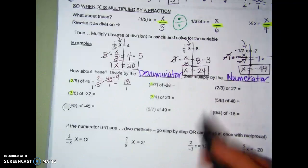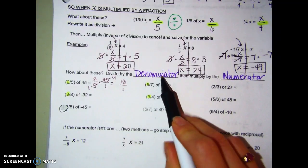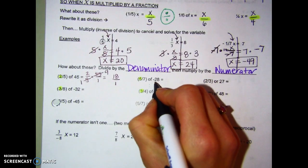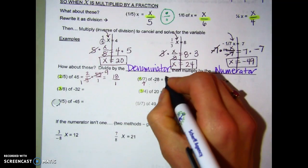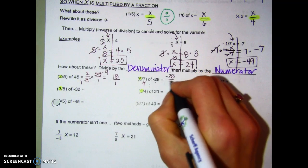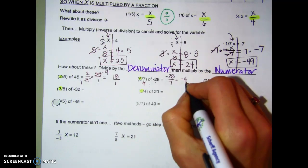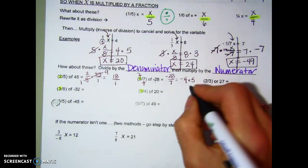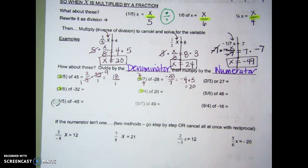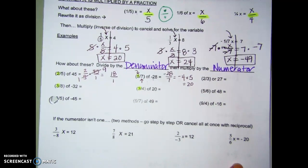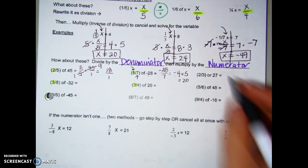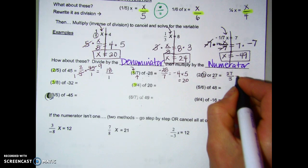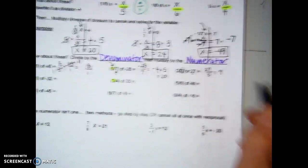Here's a shortcut: divide by the denominator, then take the answer and multiply by the numerator. So negative 28 divided by 7 gives me negative 4, and then multiply by the numerator — negative 4 times 5 equals 20. Another example: 27 divided by the denominator gives me 9, multiply it by the 2, and I get 18.